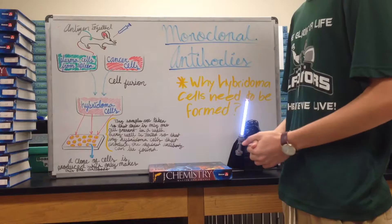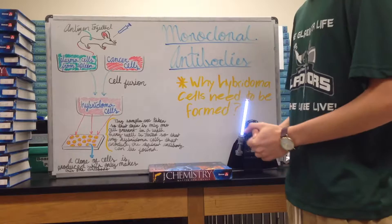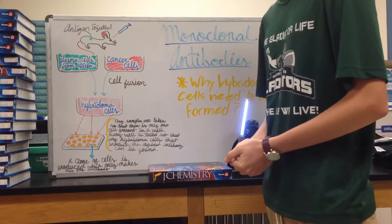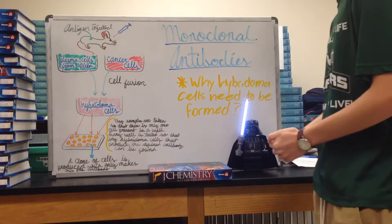They're taken out and put into little wells so that they culture. Each well should have at least one cell that produces the desired antibody. This cell is then taken out to mass reproduce the antibodies we need.